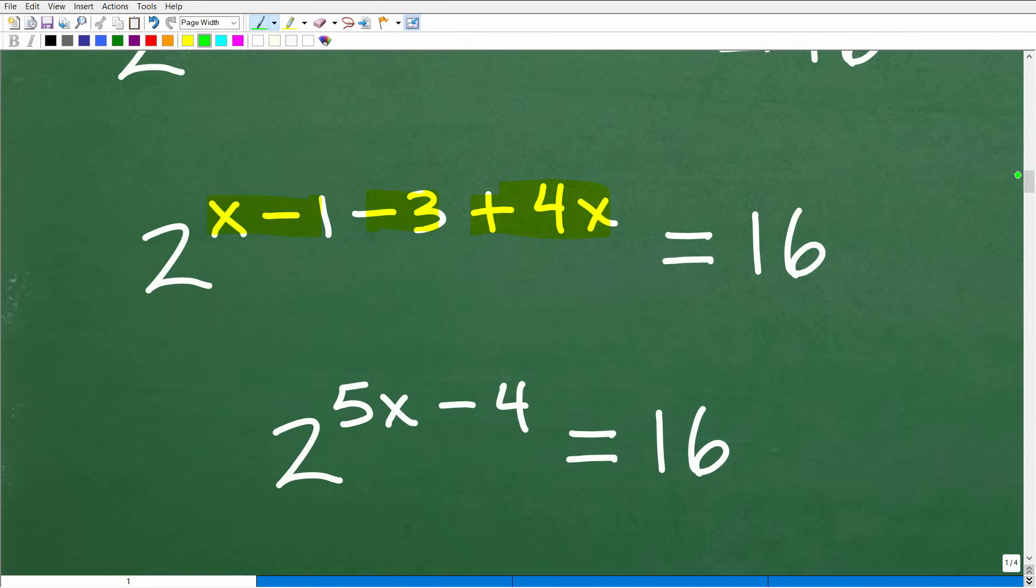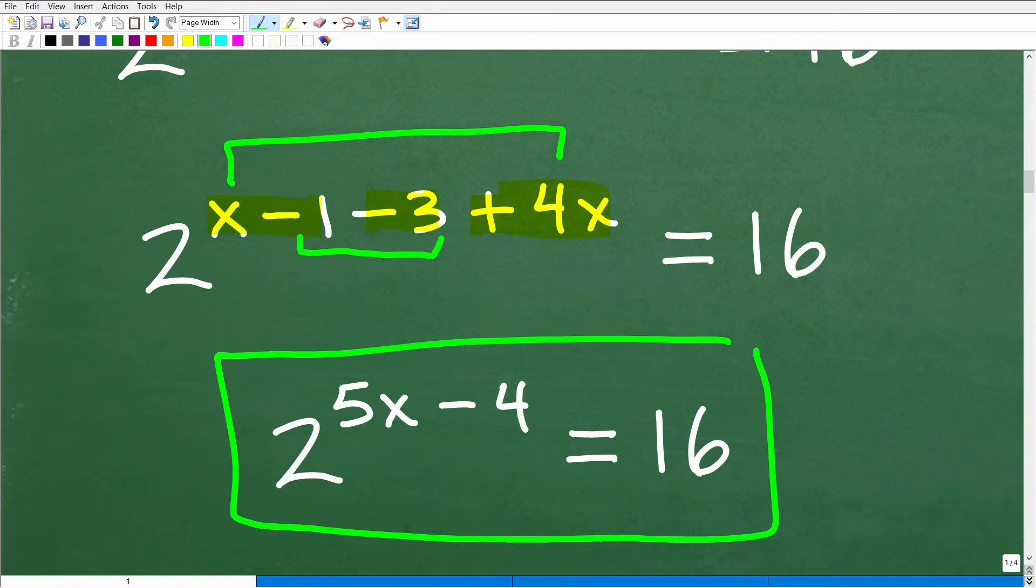Now, let's go ahead and take the next step here and combine like terms. We have x and four x, which of course is five x and negative one and minus three is negative four. So now we're at this stage. We have a basic lovely exponential equation.